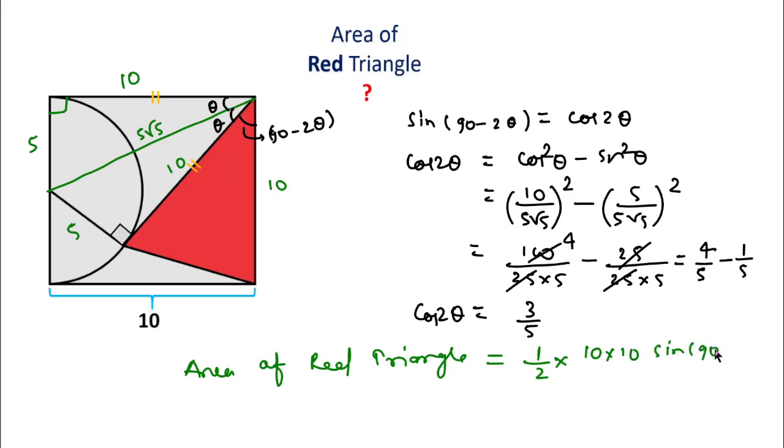...90° - 2θ. But sin(90° - 2θ) is cos(2θ), and the value of cos(2θ) is 3/5. So substituting this value, the right answer is 30 square units.